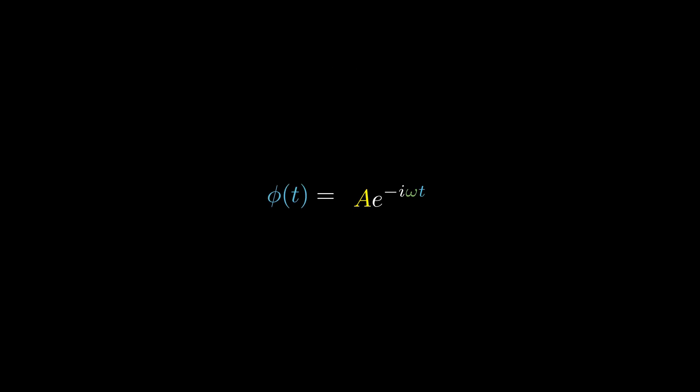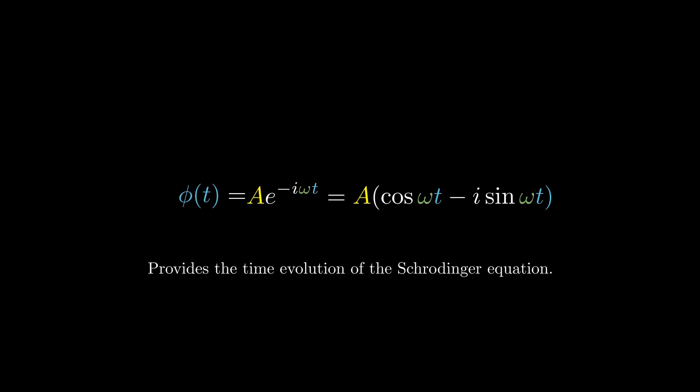Using Euler's formula, we can rewrite this out explicitly using trigonometric functions. This equation provides us with the time evolution of the Schrödinger equation.